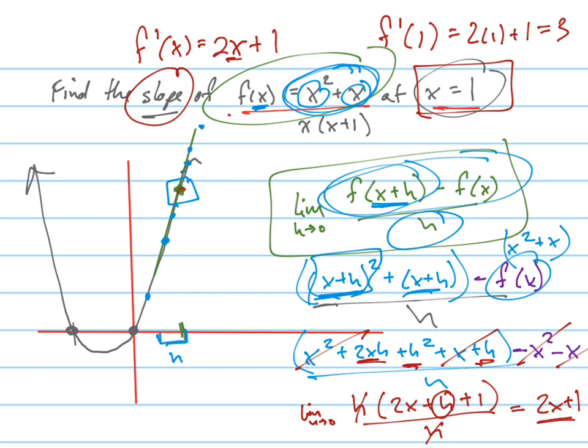So the slope of this line right here, this line, the tangent line, is 3. And that's the answer to the question.